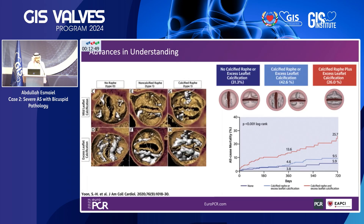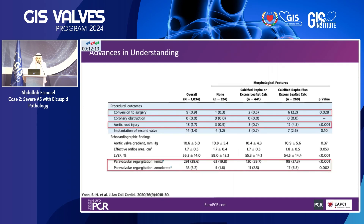More recently, Yoon published a paper in JACC in 2020 identifying features associated with worse outcomes in bicuspid aortic stenosis. Around 26% of patients with bicuspid aortic stenosis have severely calcified raphae or excessive calcification of the leaflets, and these patients have worse outcomes — around 25% all-cause mortality when treated with TAVI. Excessive calcification is also associated with higher conversion rate, higher aortic injury, and higher PVL.